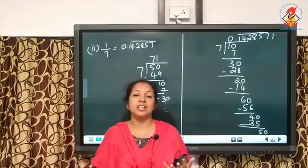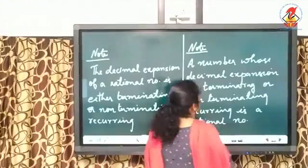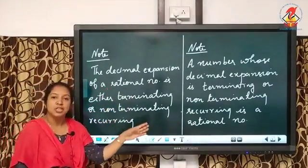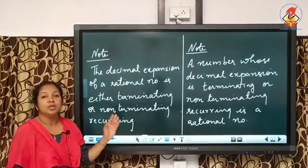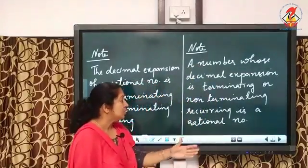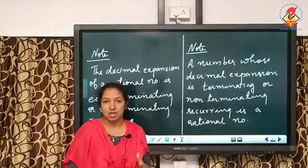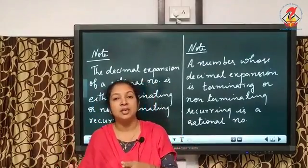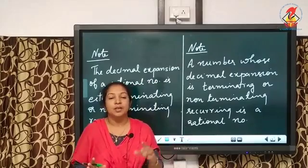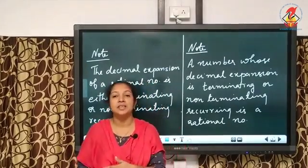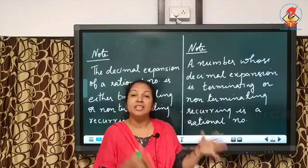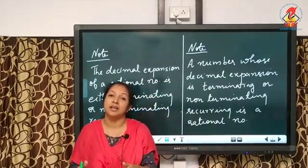So what we can say is: the decimal expansion of a rational number is either terminating or non-terminating recurring. Conversely, if the decimal expansion is terminating or non-terminating recurring, we can say it is a rational number. So rational number implies either terminating or non-terminating recurring decimal expansion, and vice versa.